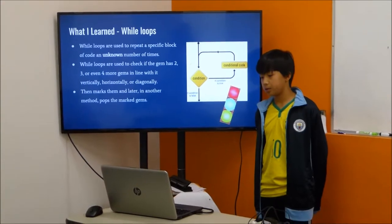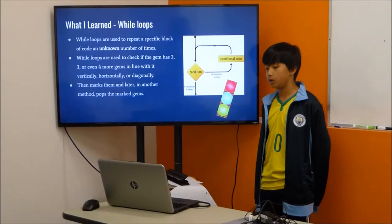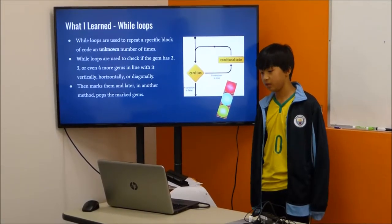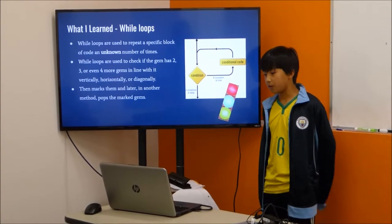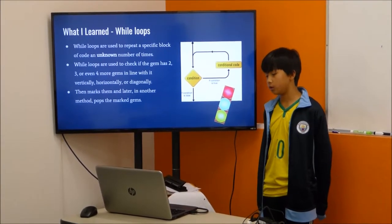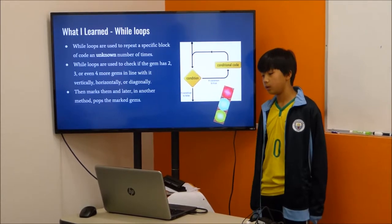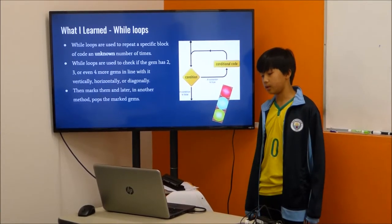While loops are used to repeat a specific block of code an unknown number of times. While loops have a condition, and if the condition is true, then you do the code inside the loop, and then it keeps looping until the condition is false.